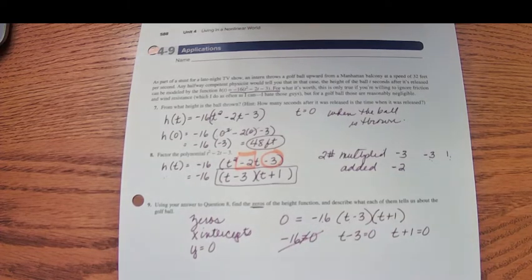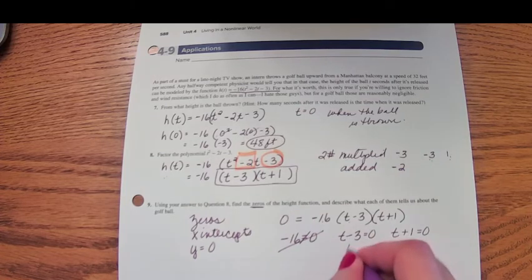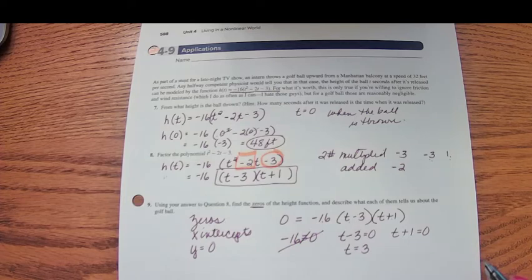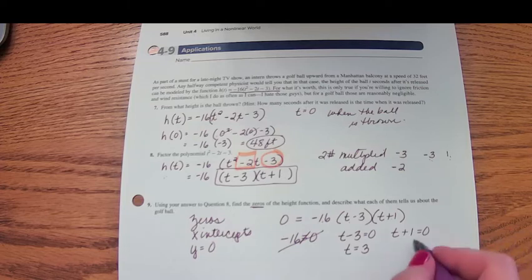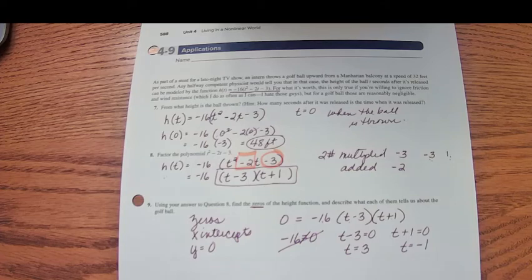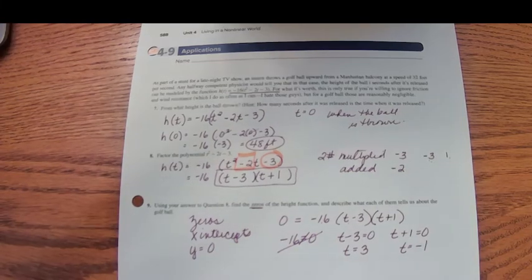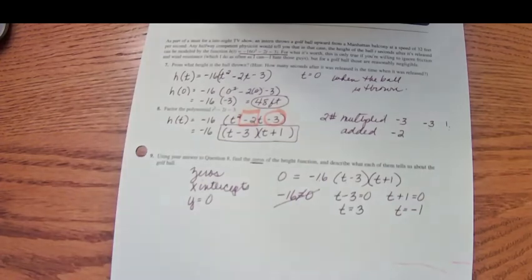Here we'll add 3 to both sides, so when t equals 3, t minus 3 will equal 0. And here we're going to subtract 1 from both sides, so when time is negative 1. Now remember, this t stands for time since the ball is thrown.